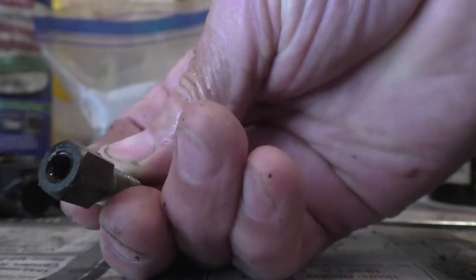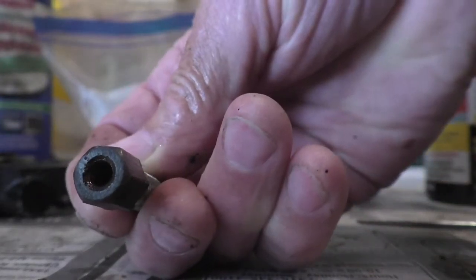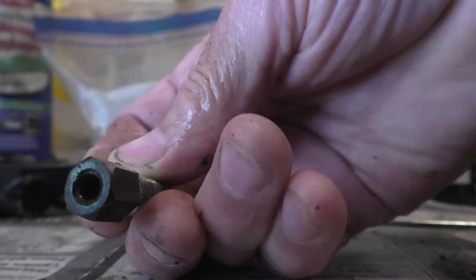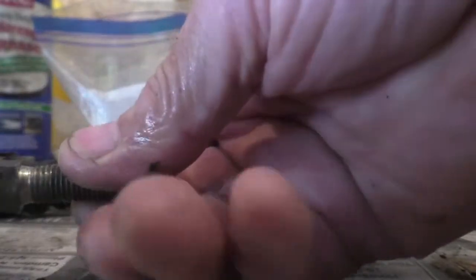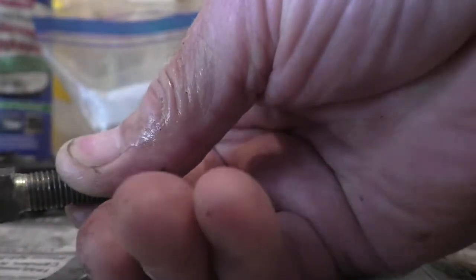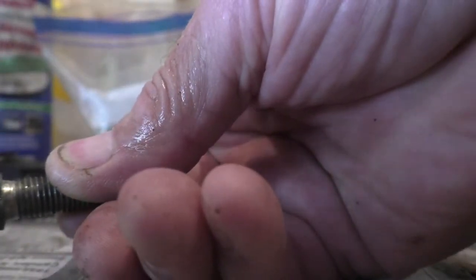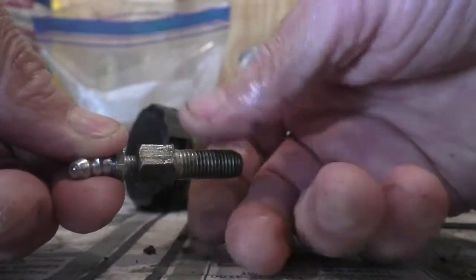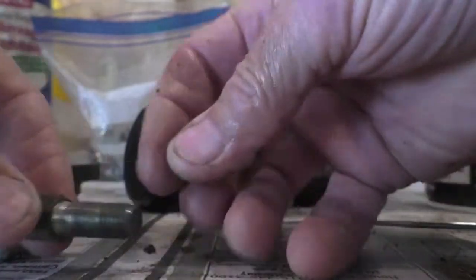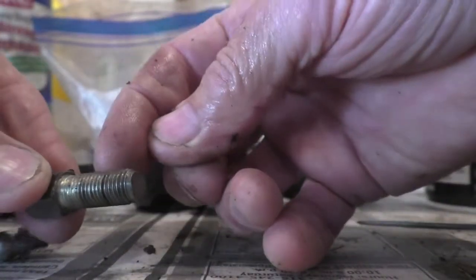Here's the good news: a number six metric grease gun fitting threads into the end of that, so I don't have to cut threads in there. That grease fitting threads right into there, as you can see. I'm going to cut this shorter, maybe cut it off about here.